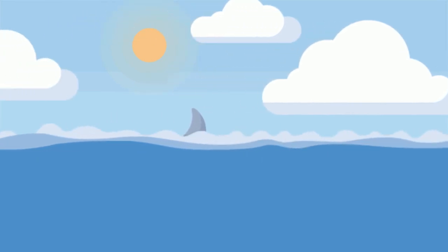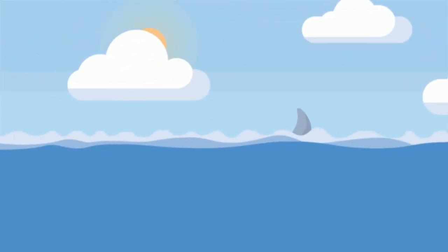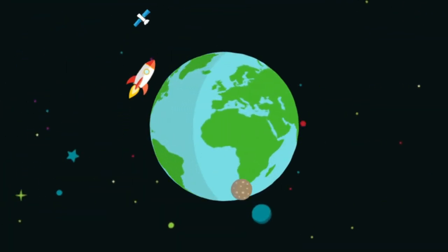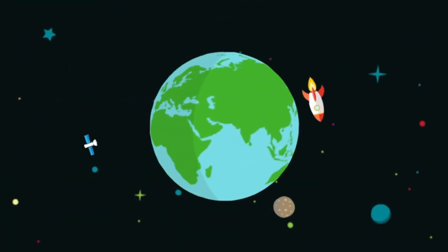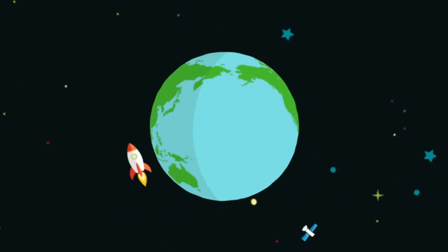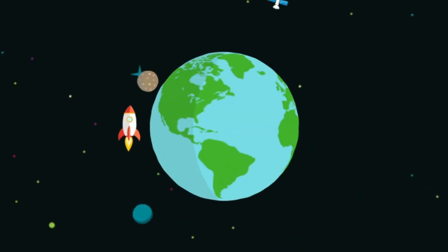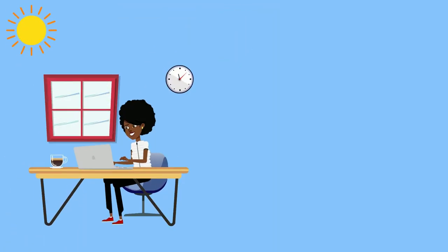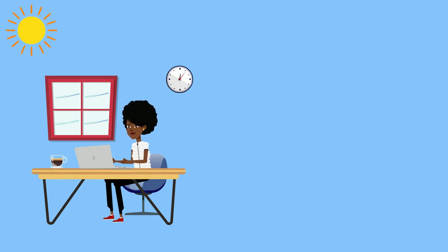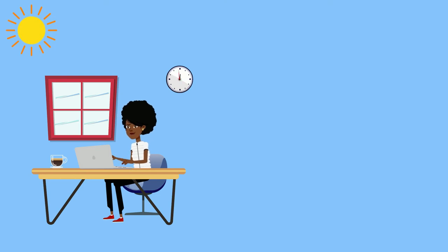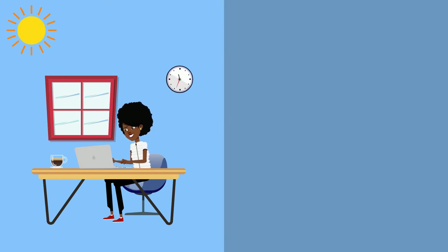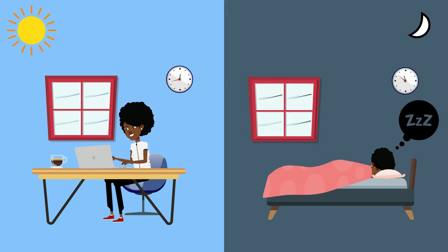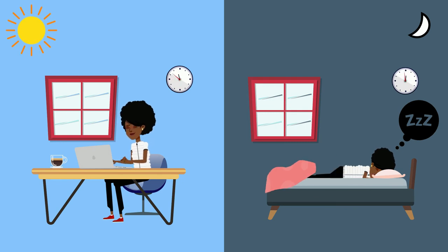In the day, the sky is blue but at night, it appears black. Most of the living things go around and do their chores in the day while they sleep at night.